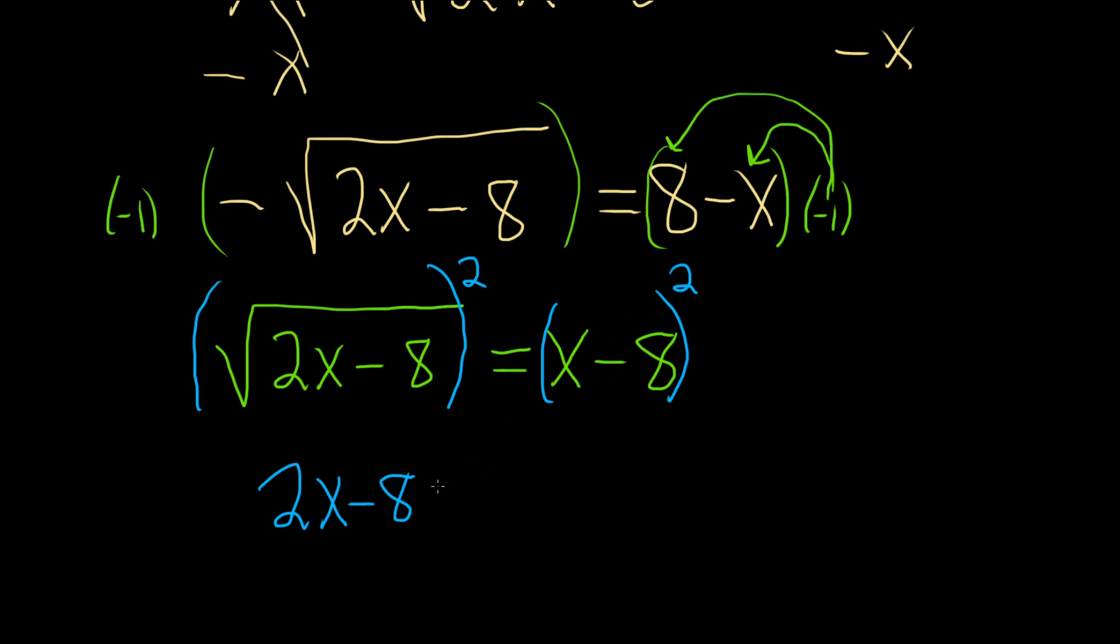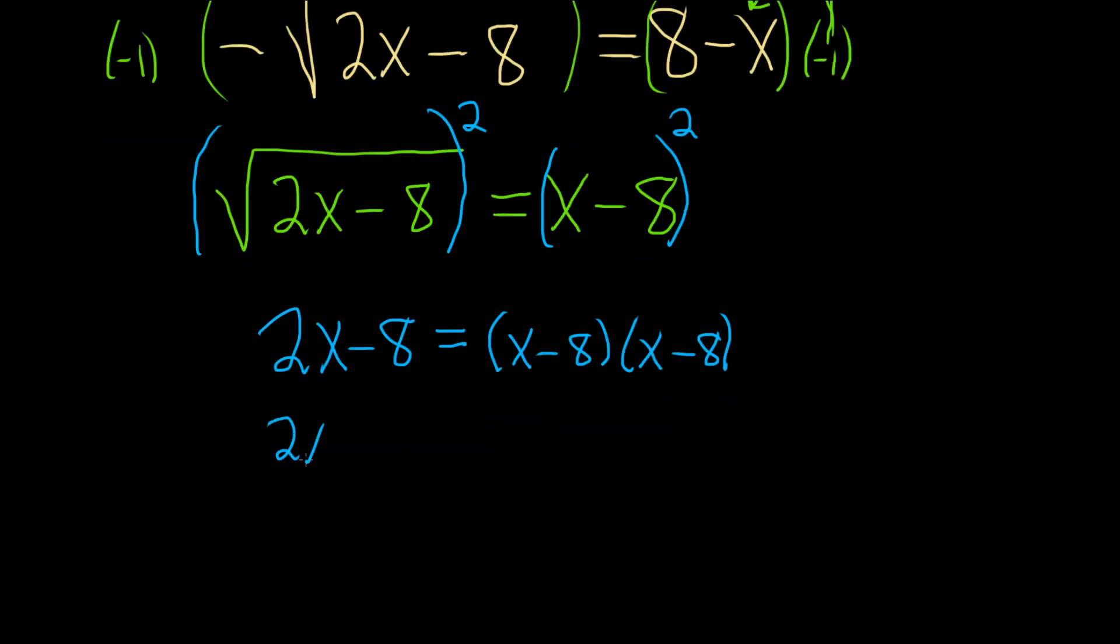There's a couple different ways to do this. I'm going to do it maybe the most basic way. Whenever it's squared, you can just write it twice and multiply it out. So this is 2x minus 8 equals, and now we'll distribute. I take the x and multiply it by both: x squared minus 8x. Then take the negative 8 and multiply it by both: negative 8x. And the very last one, negative 8 times negative 8, is going to give us positive 64.